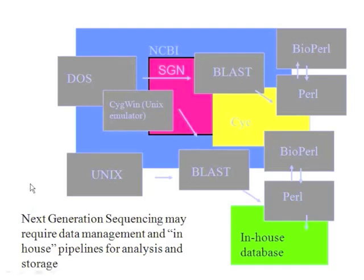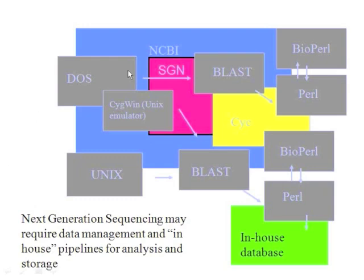What I'm trying to demonstrate in this slide is that we have a number of external resources — either NCBI, SGN, or some of the metabolic cycle databases — that are populated with information. However, we may want to extract a small part of that information in order to address specific questions. What I'm illustrating in the gray are some of the approaches that can be used to do that. Versions of BLAST are available to work within a DOS environment, so within a Windows environment, as are versions of Perl and BioPerl. So you can do this all on a DOS machine.